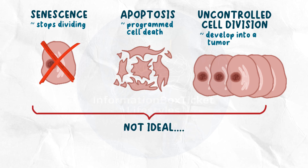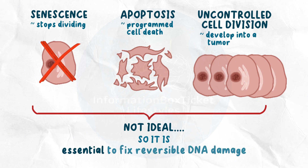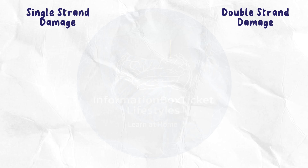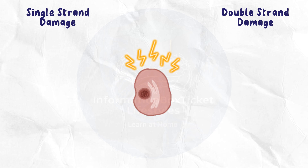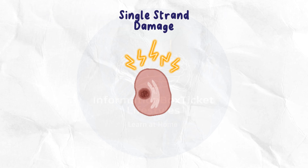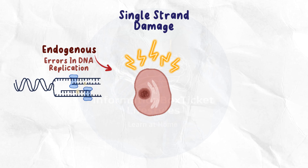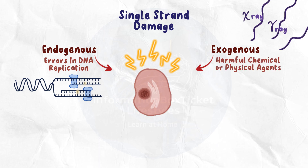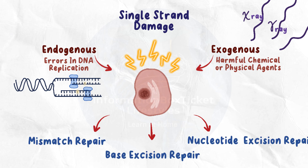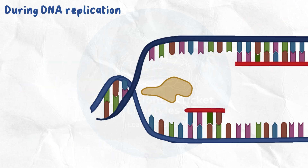None of these outcomes are ideal, so cells must repair reversible DNA damage and avoid excessive DNA mutations. In general, there can be either single- or double-strand damage, and the cell has mechanisms in place to deal with both. Three repair processes address single-strand damage: mismatch repair, base excision repair, and nucleotide excision repair.